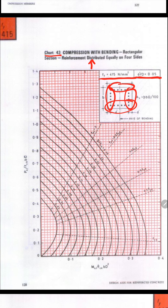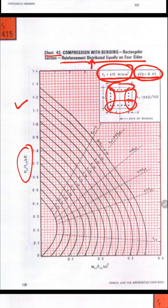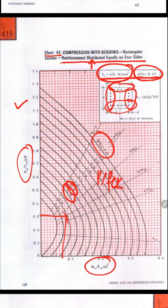If in your problem Fe 415 steel is there and you are getting d'/d = 0.05, and you are going to provide reinforcement on all four sides, then you will be using this chart. You calculate these two values: Pu / (fck·b·d) and Mu / (fck·b·d²). Based on the intersection of these two values, you find the p/fck value.